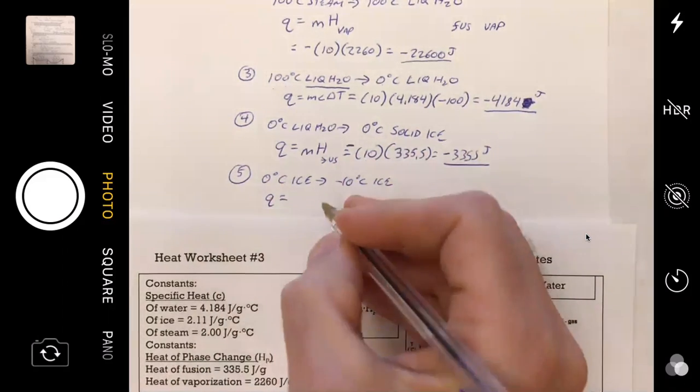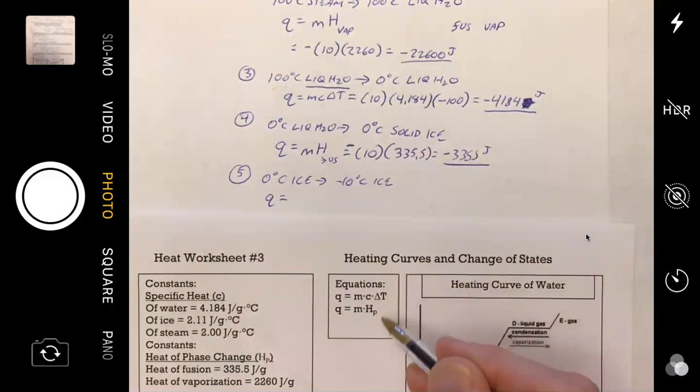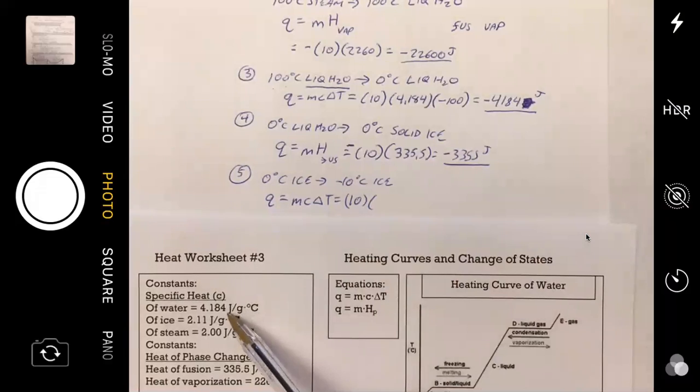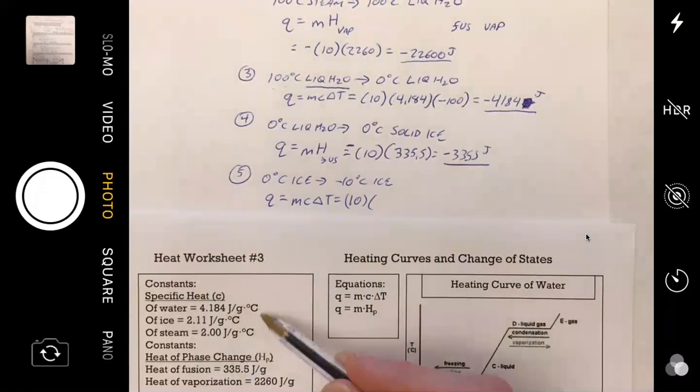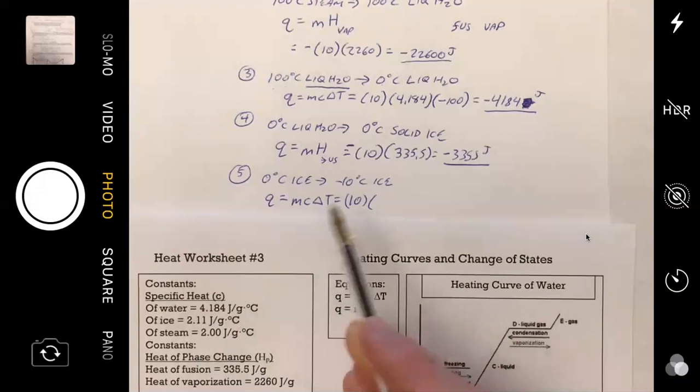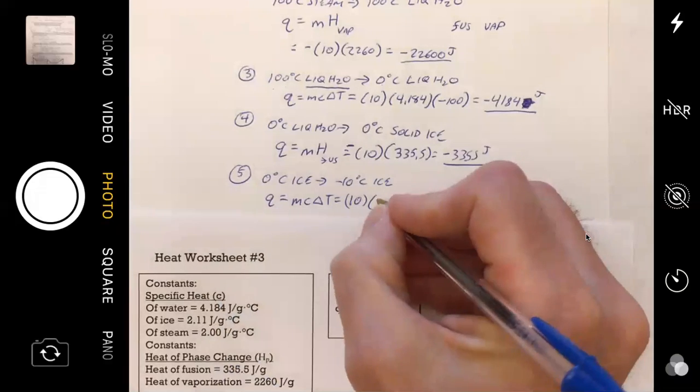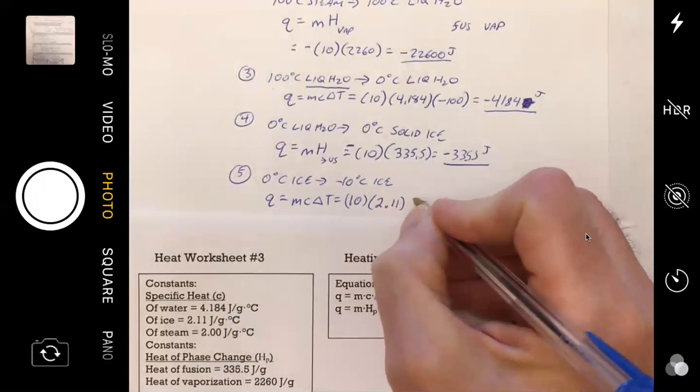We go ahead and plug in. We've got 10 grams of ice. Now Jack, which of these C values should I use? What C value do you use? We're doing zero degree ice to 10 degree below zero ice, to the ice. We'd want to use the value for the ice. Yeah, 2.11. There's so many places you can make mistakes.